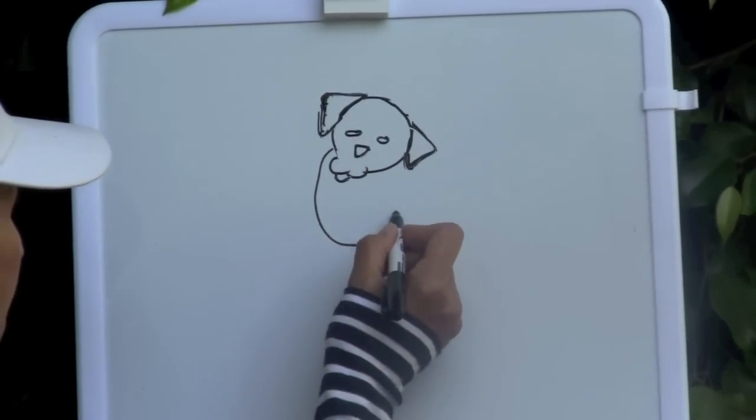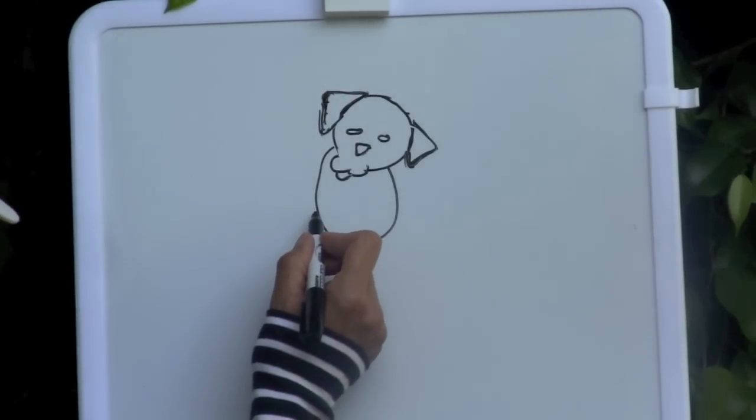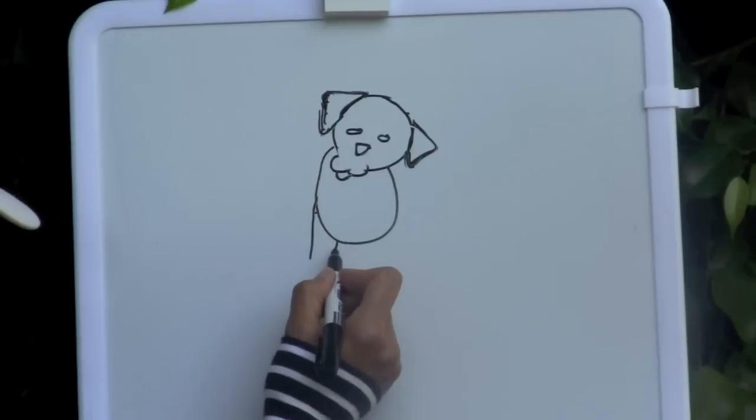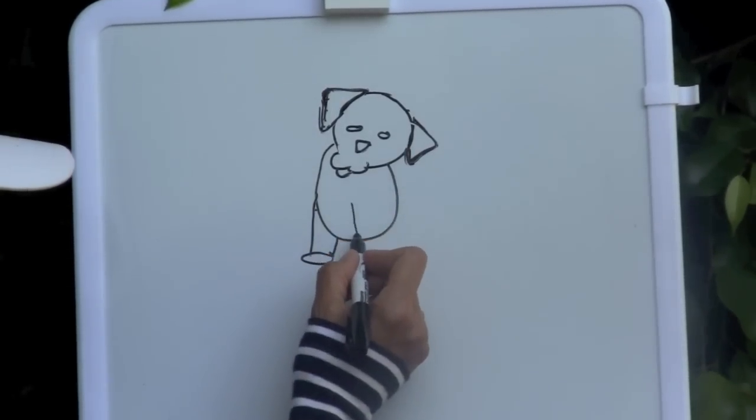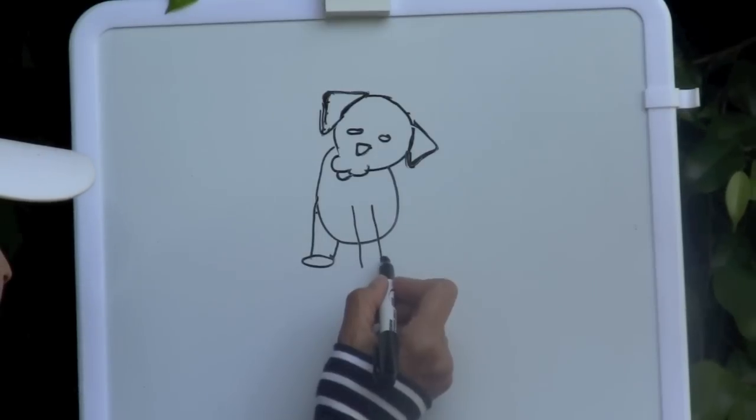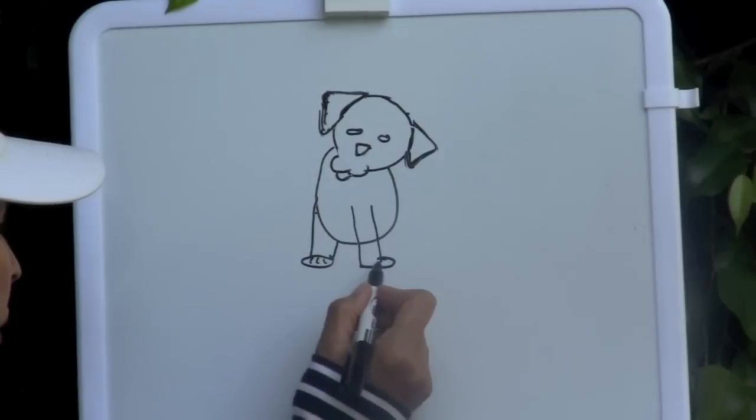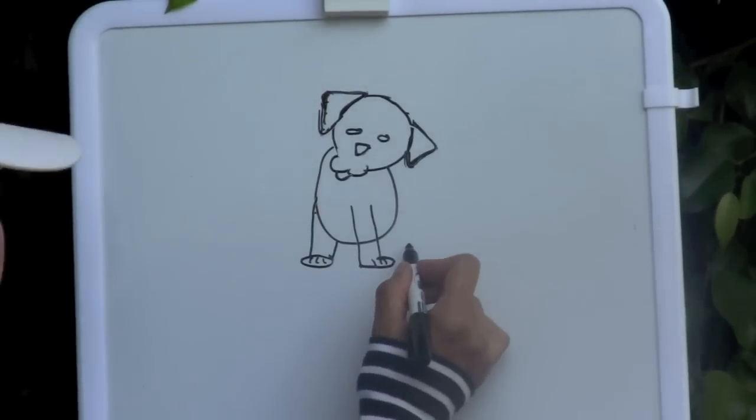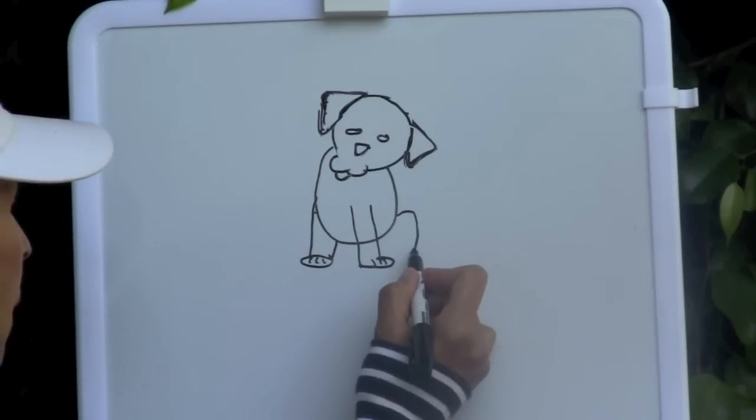Then I want you to draw a large oval for his body. Now let's draw a leg here, he has his paw at the end, another leg over here. There's also lines there to show the paw, and his back legs are back here.